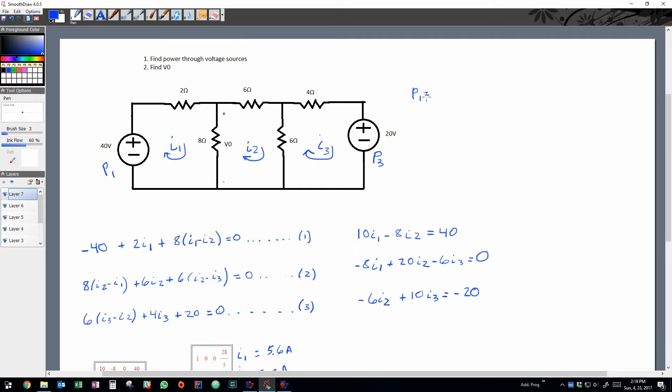So for power, as you guys know, is current times voltage or IV. So we'll take the voltage first, which is negative 40, and we'll multiply it by the current, which in this case is 5.6, and we actually get a power of negative 224 watts.